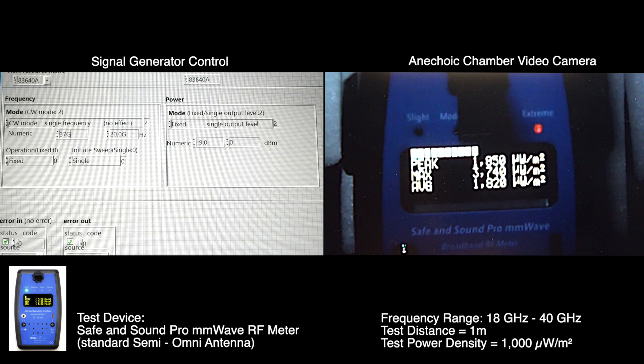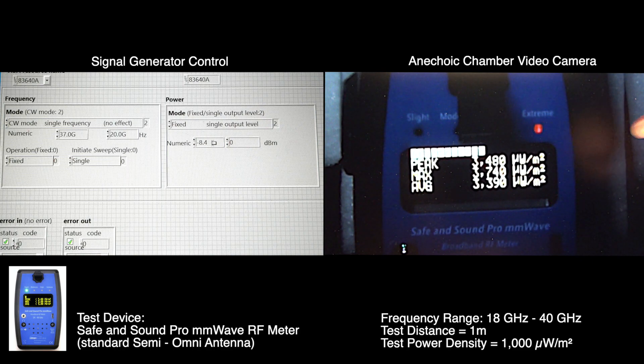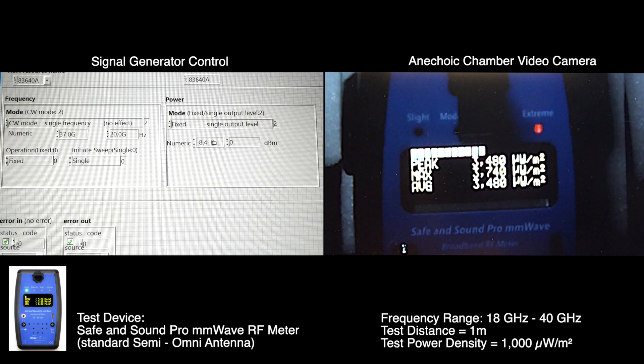37 gigahertz, minus 8.4 dBm is what we need. It's quite sensitive here, 3480 microwatts per square meter, but you'll see how that plots out when we do our relative frequency response plot.